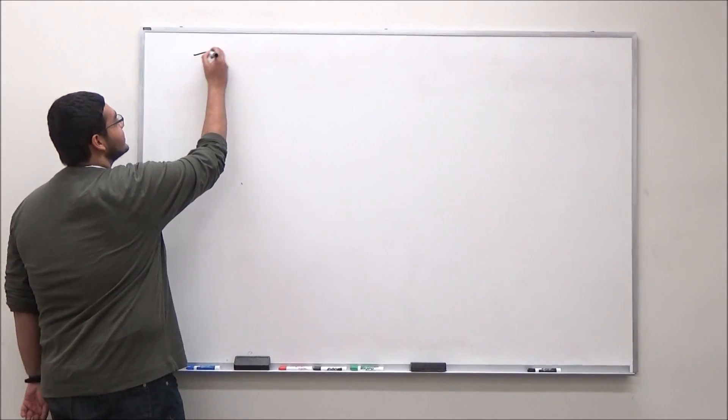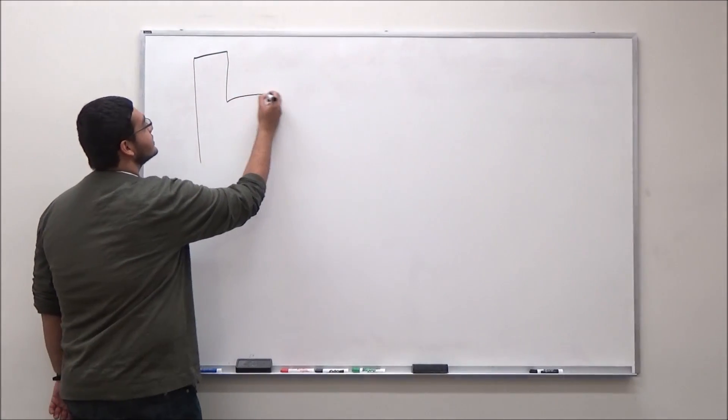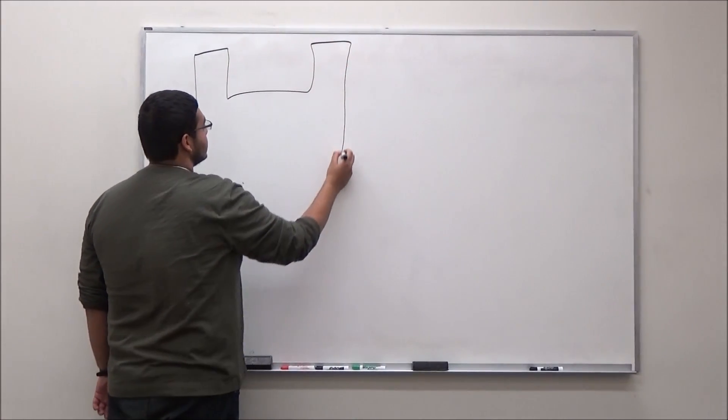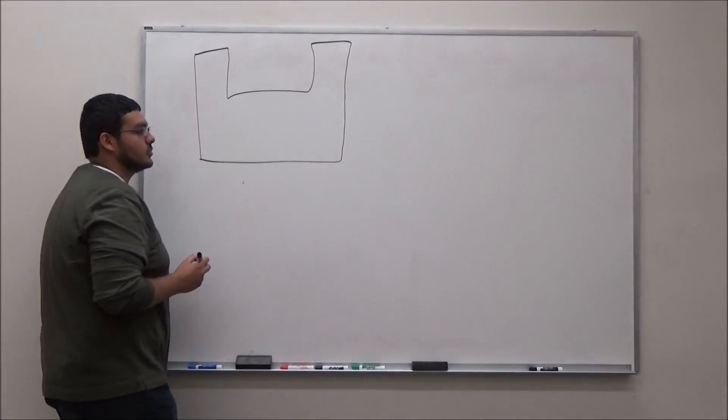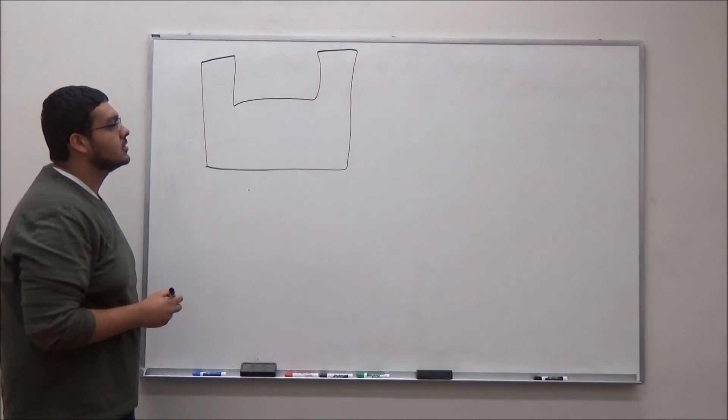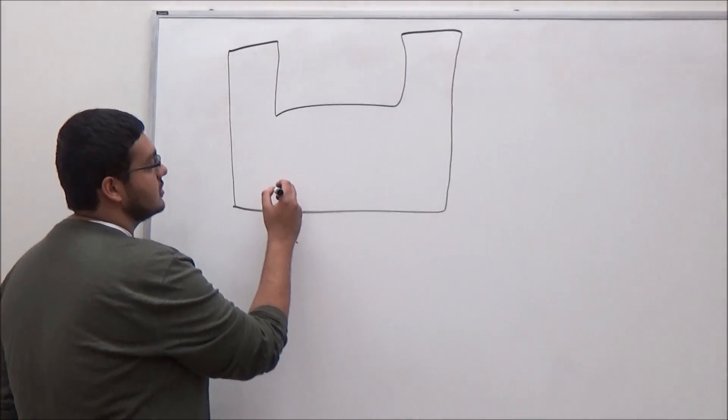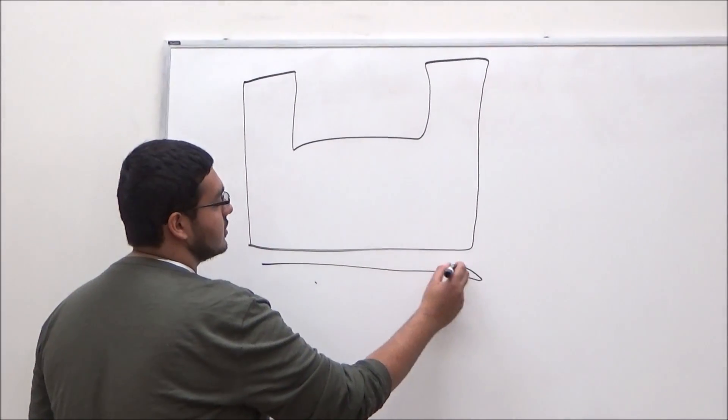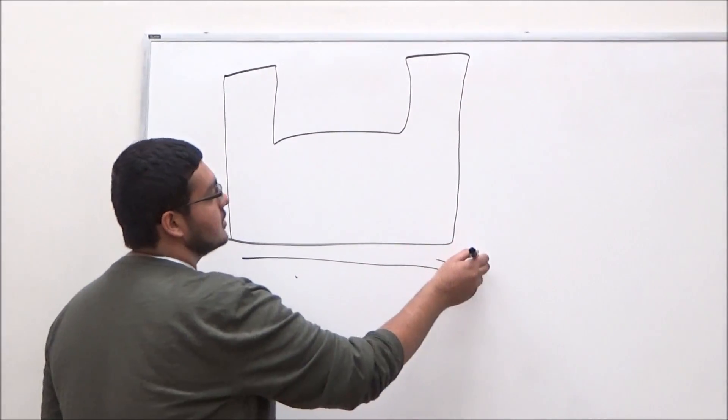Let's start with electronegativity. So first, when we look at electronegativity, we're going to look at the periodic table. In terms of the periodic table, electronegativity increases this way and increases this way.